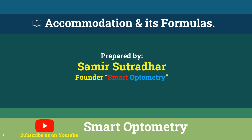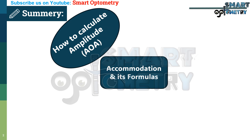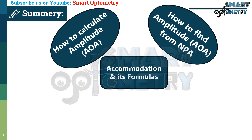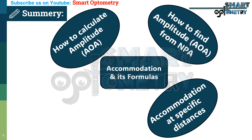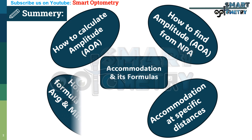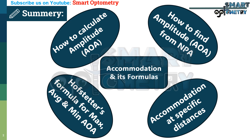Today, I will discuss about accommodation and its different formulas in clinical practice. I will discuss how to calculate amplitude of accommodation, how to find amplitude of accommodation from near point of accommodation, how to find required accommodation at any specific given distance, and Hofstetter's formula for maximum, normal, and minimum amplitude of accommodation at a particular age.